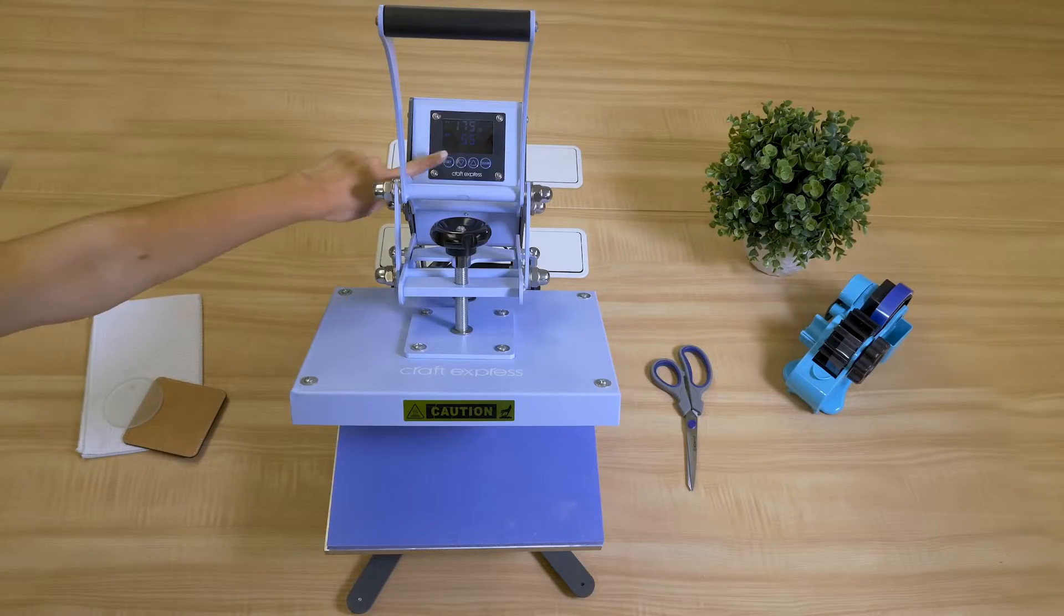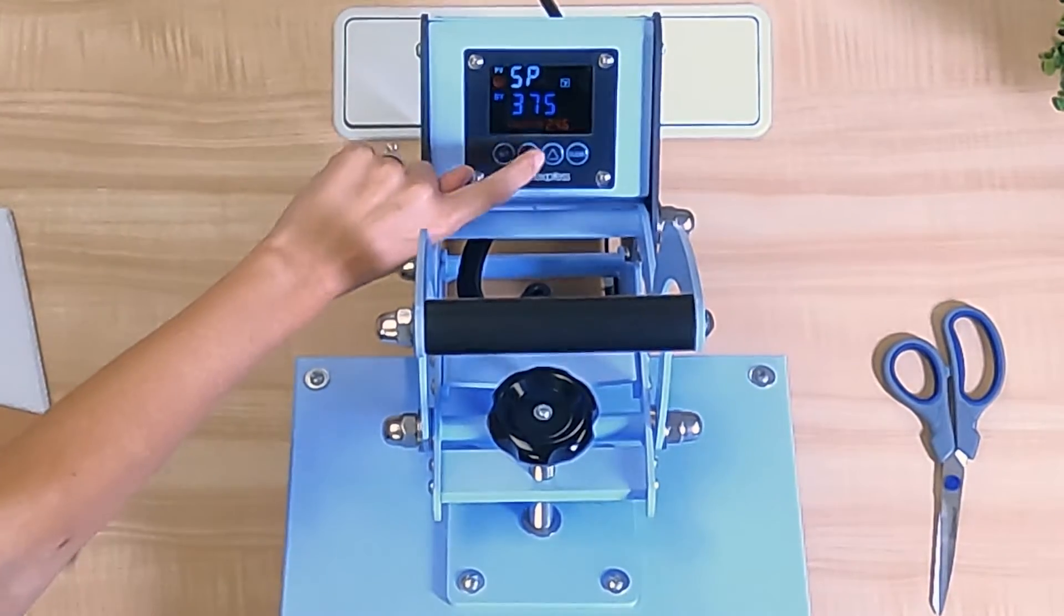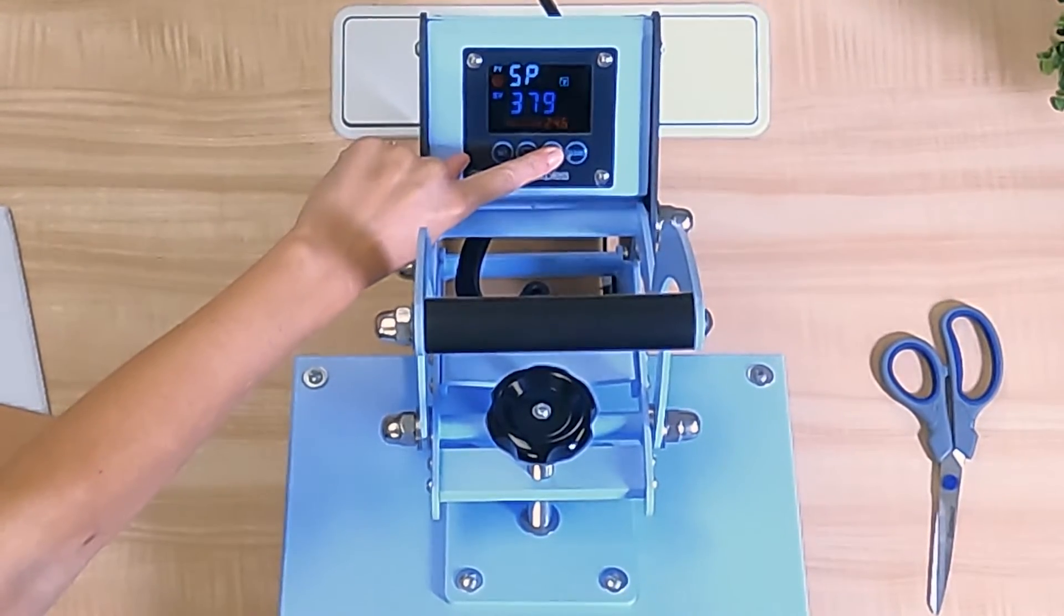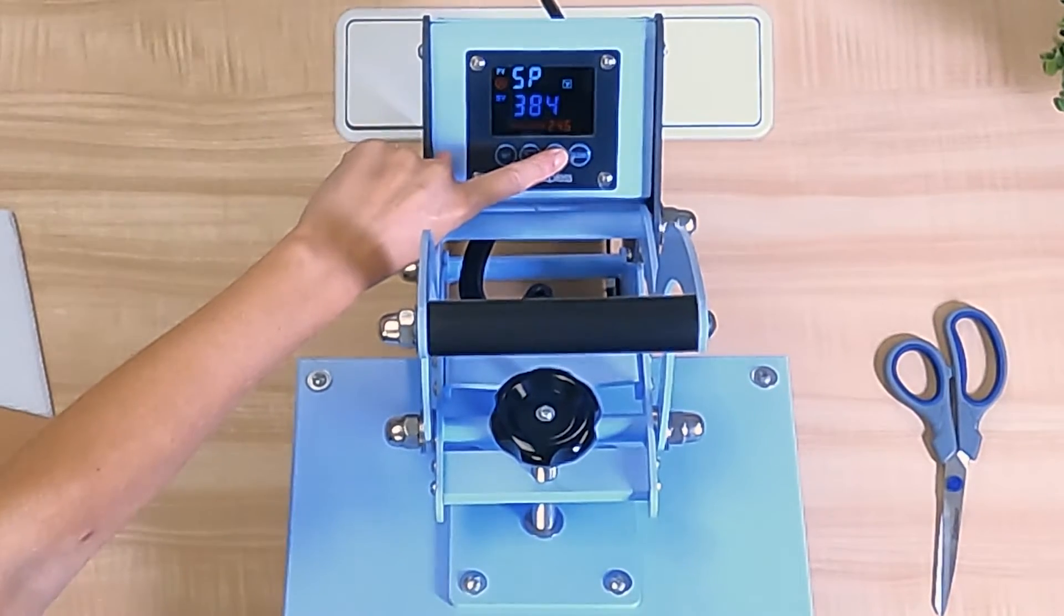Click the Set button, then click the up and down arrows to set the temperature. We are setting our press to 385 degrees Fahrenheit.